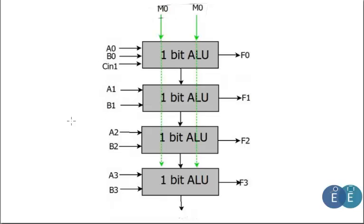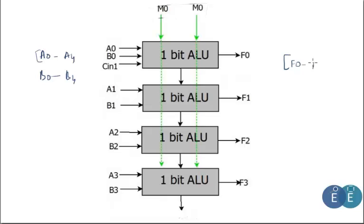In a four-bit ALU, the inputs are A0 to A4 and B0 to B4. Depending on selection lines M0 and M1, the desired operation is performed, and the output F0 to F3 is produced. This can be extended to make an eight-bit or larger ALU.